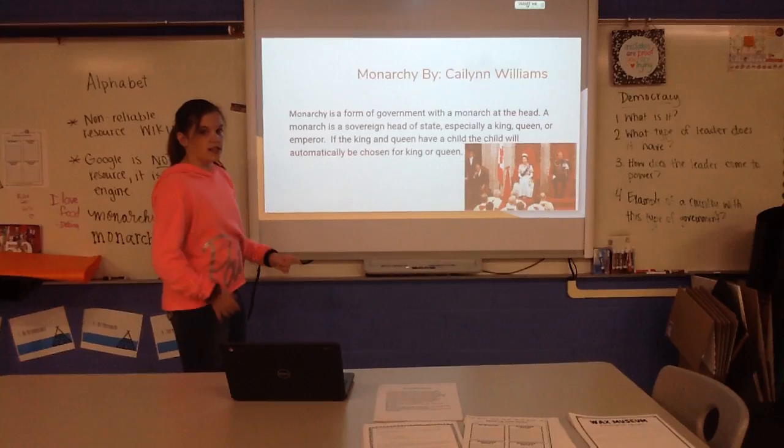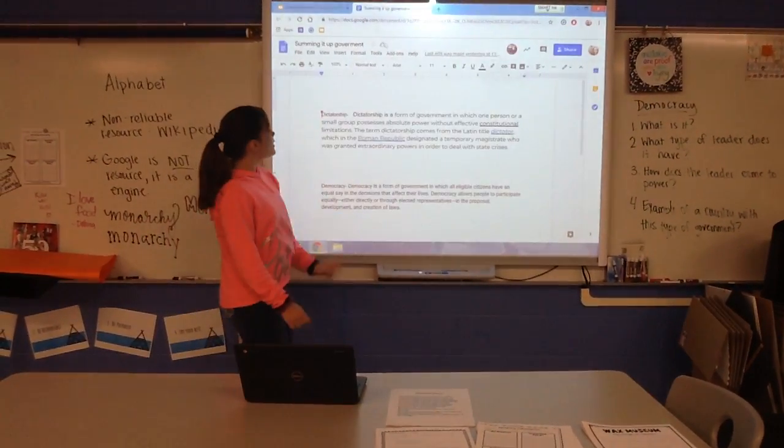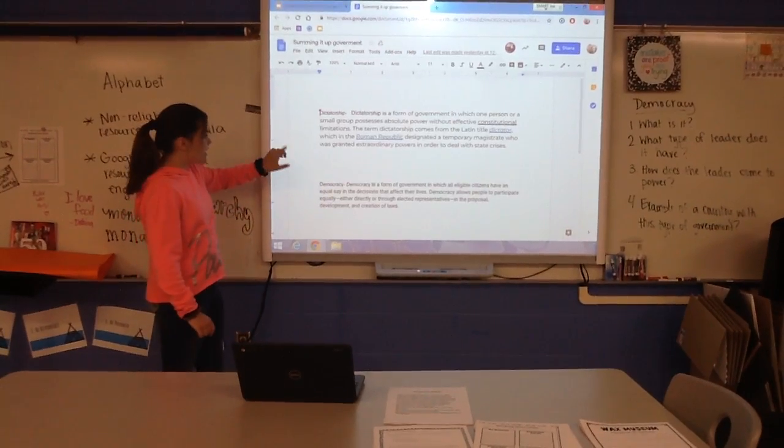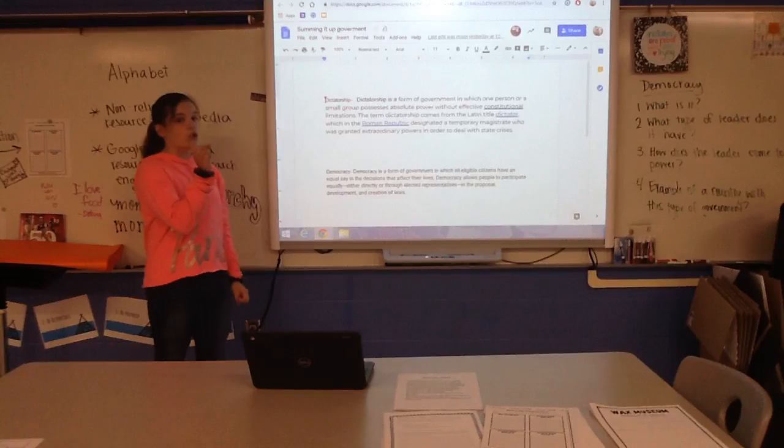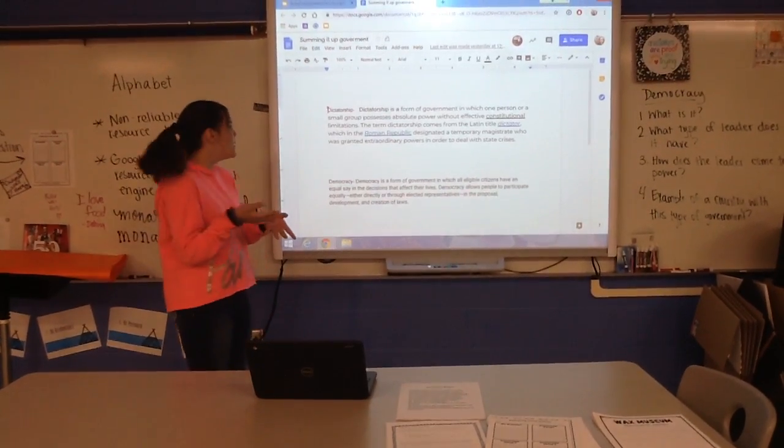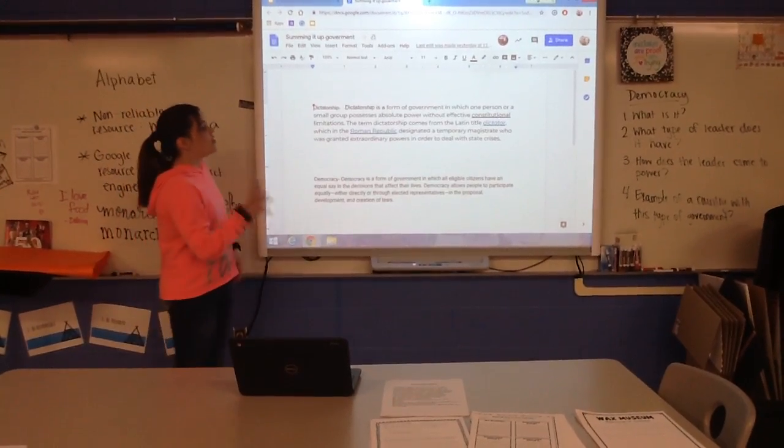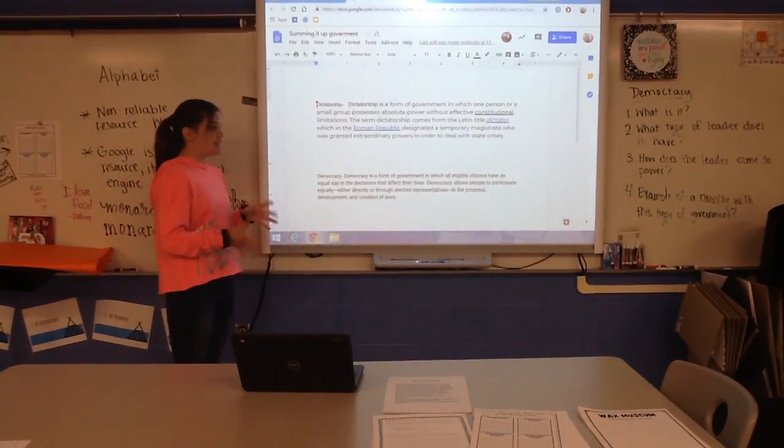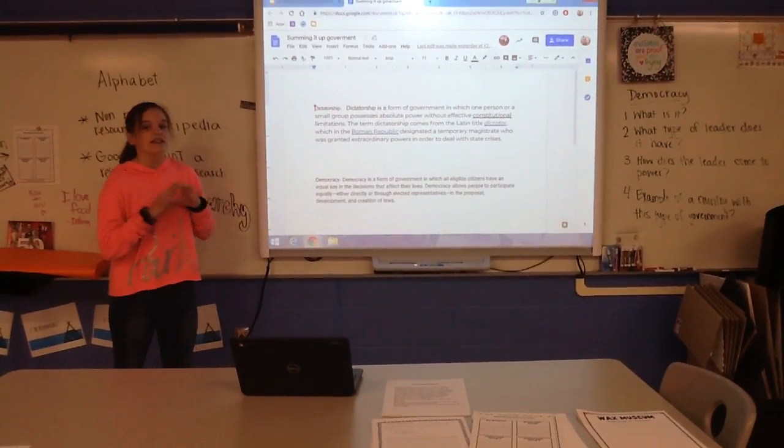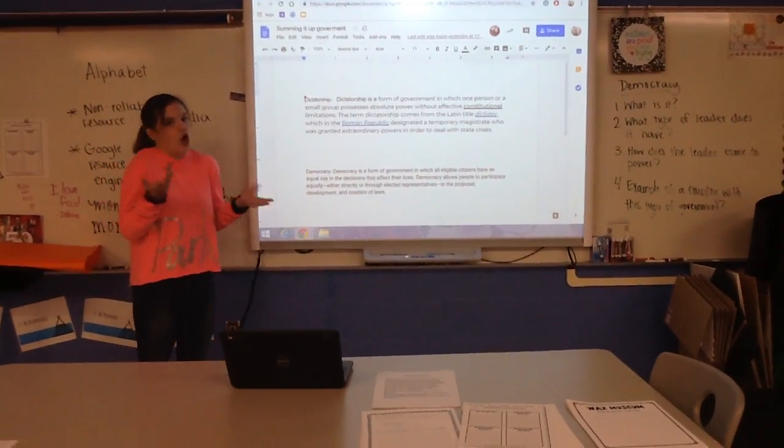Now I want to go to Google Docs just to give you a little more info. A dictatorship is a form of government in which one person or a small group possesses absolute, like all power, without effective constitutional limitations. The term dictatorship comes from the Latin word dictator, which is the one with total or all power.